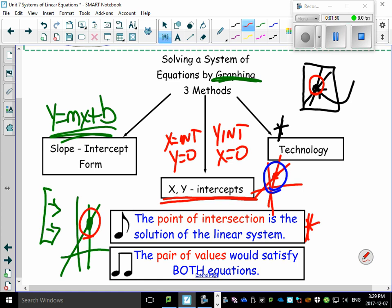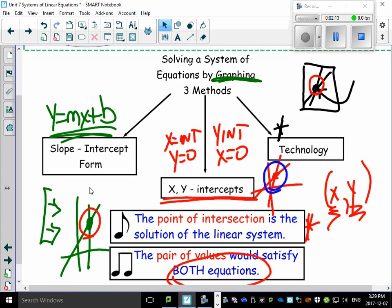That point of intersection ends up being a coordinate pair. Some x, y. Something like this. And it's really important to realize that that x, y satisfies both equations. That's what's interesting. So that's going to bring us to the next slide.